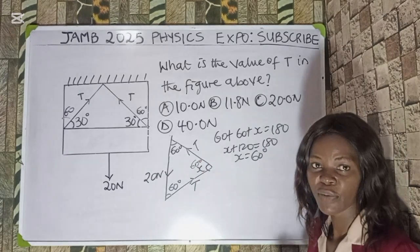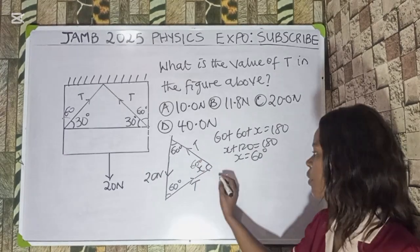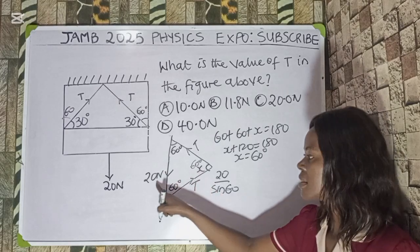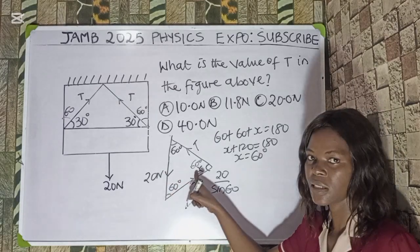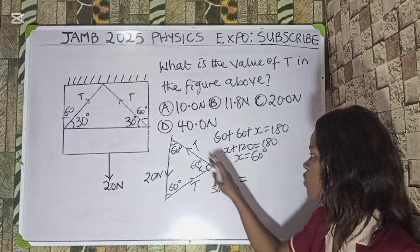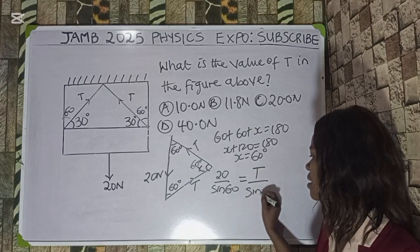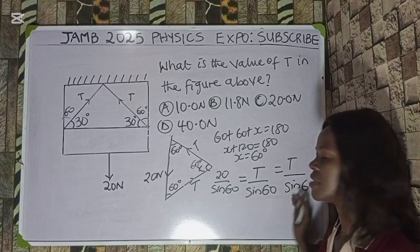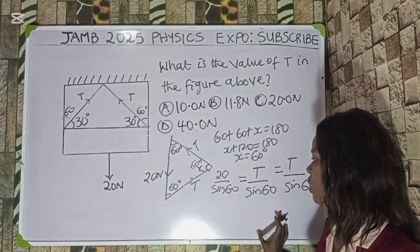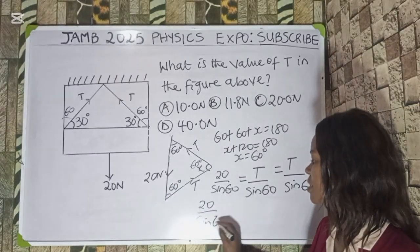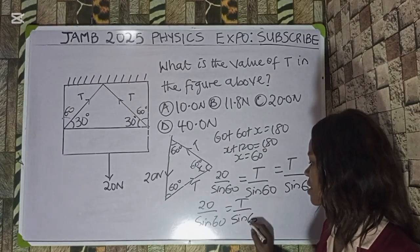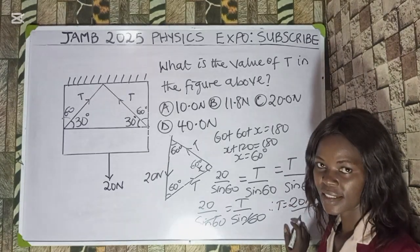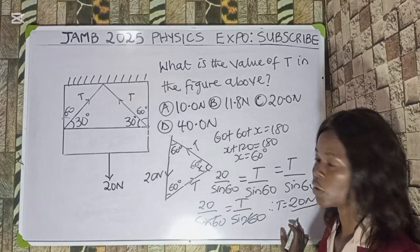That means x plus 120 equals 180, so x equals 60 degrees. So since x is 60 degrees, we are going to use the sine rule. The sine rule states that 20 over sine 60 is equal to T over sine 60. Now since the tension is the same, and 20 over sine 60 equals T over sine 60, sine 60 cancels sine 60, so automatically T equals 20 newton. So the correct option to this question is option C.